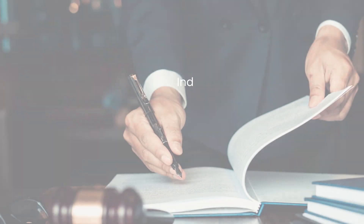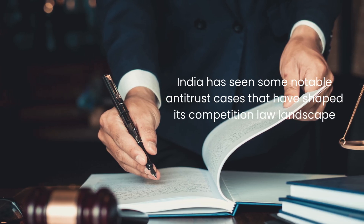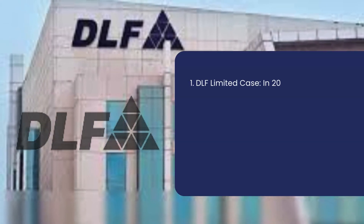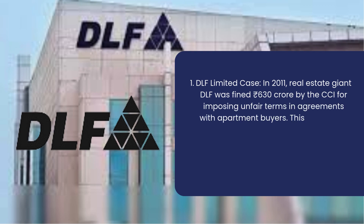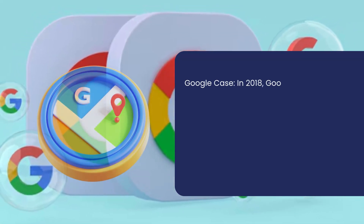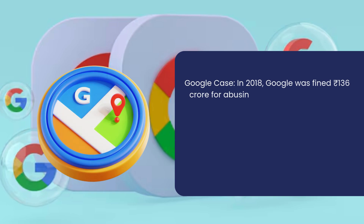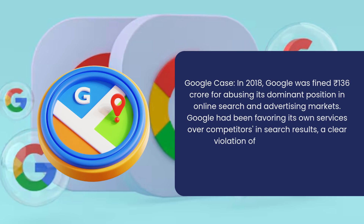India has seen notable antitrust cases that have shaped its competition law landscape. Number one, the DLF Limited Case: in 2011, real estate giant DLF was fined Rs. 630 crore by the CCI for imposing unfair terms in agreements with apartment buyers — one of the largest penalties imposed by the CCI at the time. Number two, the Google Case: in 2018, Google was fined Rs. 136 crore for abusing its dominant position in online search and advertising markets. Google had been favoring its own services over competitors in search results, a clear violation of competition law.